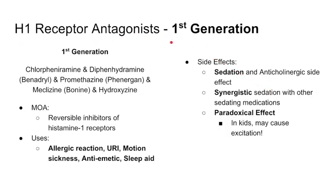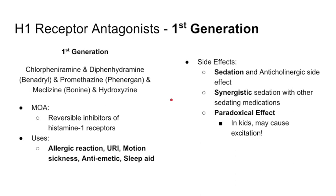Our first group is our H1 receptor antagonists — the first generation. We have a couple of them here: chlorpheniramine, diphenhydramine which is Benadryl, promethazine which is Phenergan, meclizine which is Bonine, and hydroxyzine. It's very important to know the names of the drugs. Honestly, it's probably the hardest thing to do — just keep straight the drugs that are H1 histamine receptor antagonists. I've included some of the brand names in parentheses because they may help you associate with what they do better, since everybody's heard of Benadryl but maybe not everybody has heard of diphenhydramine.